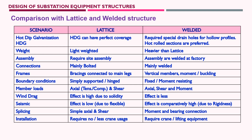For connections, lattice support structures use mainly bolted connections. Welded support structures use mainly welded connections, though some fixing points — such as earthing box, operation box, or tie members — require bolted connections. The base plate in a lattice structure is connected to the angle member with some welding. So we say 'mainly bolted' for lattice and 'mainly welded' for welded structures, rather than wholly one or the other.